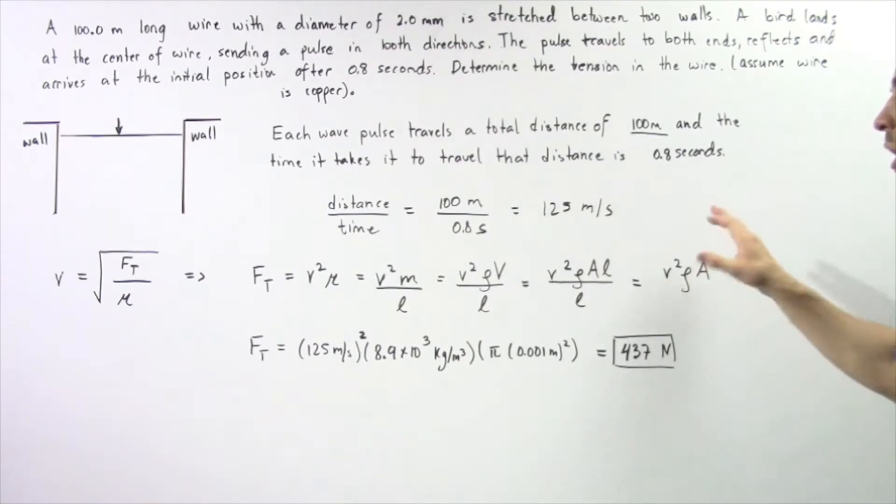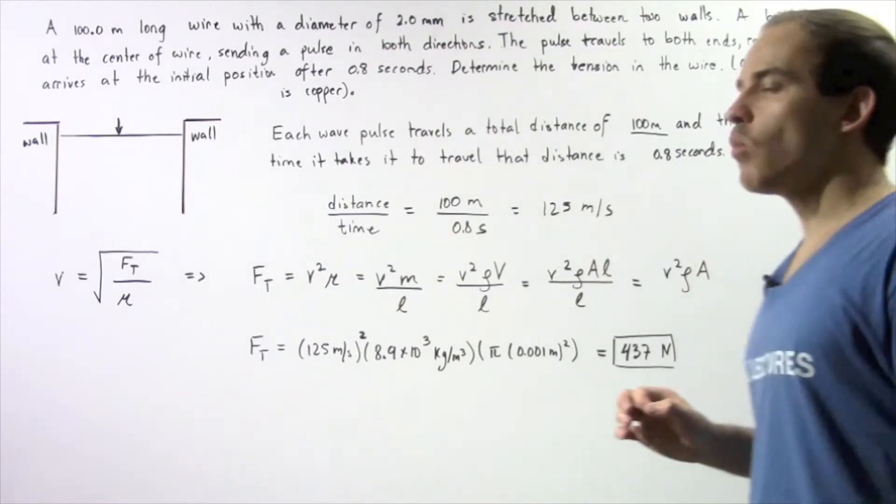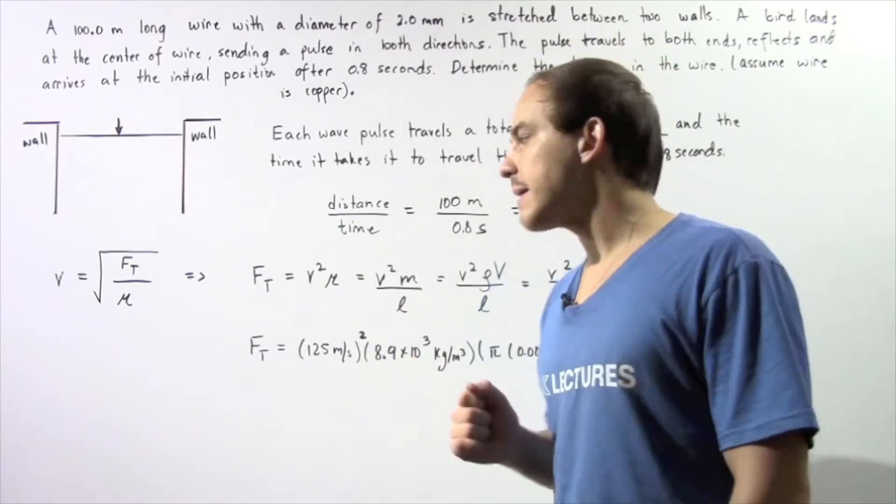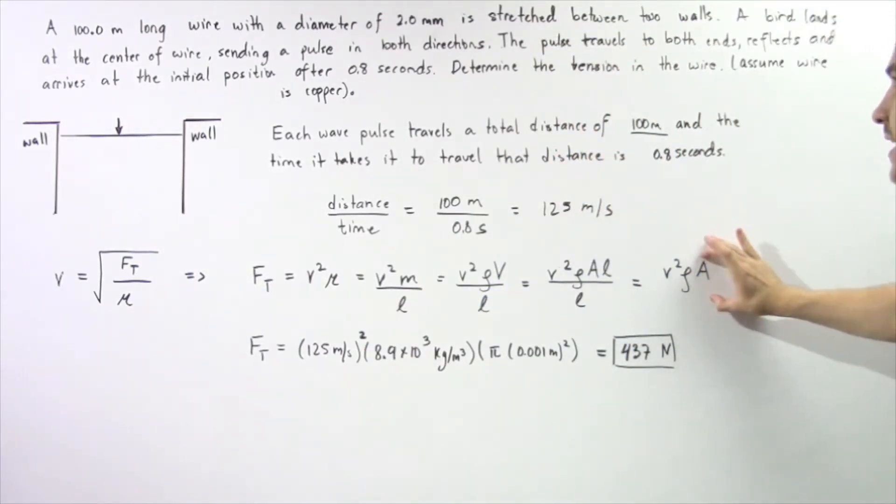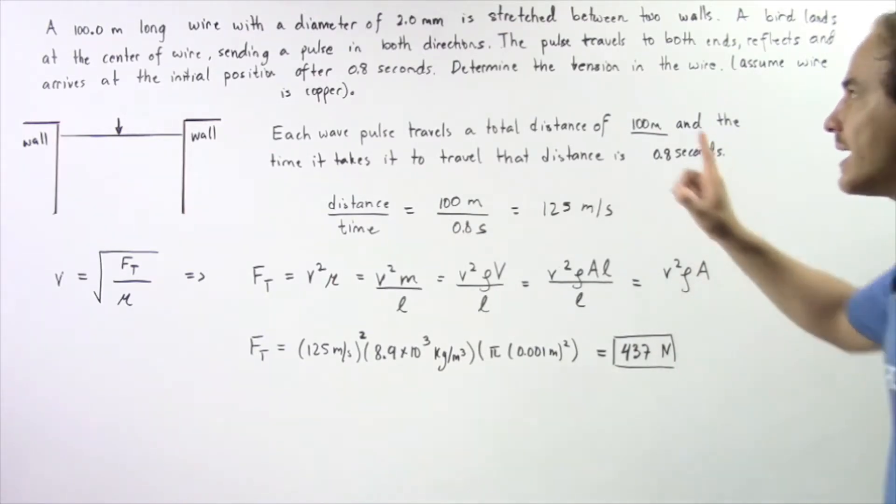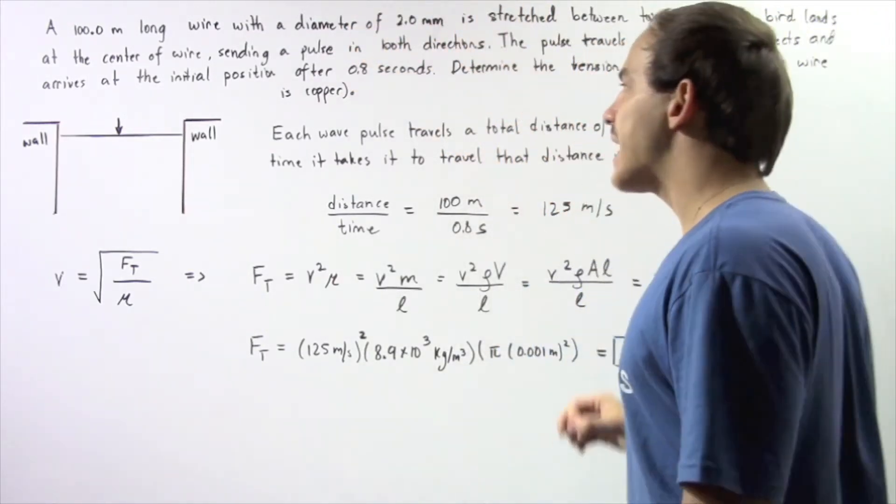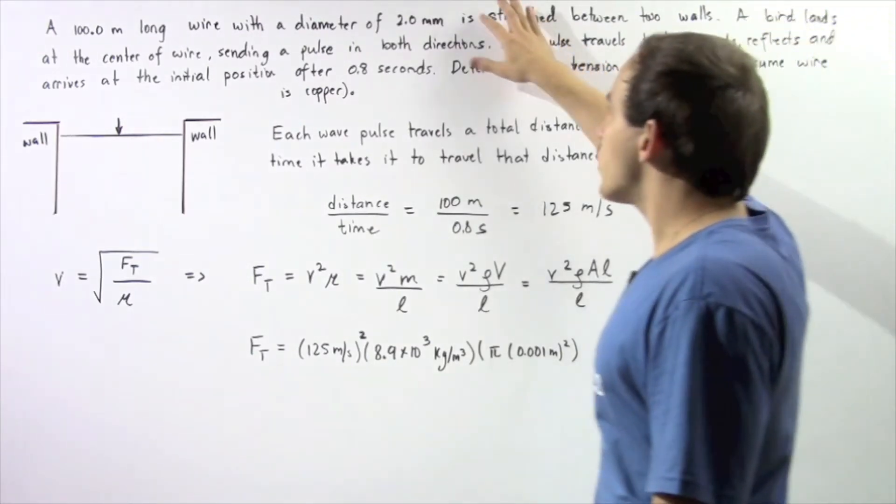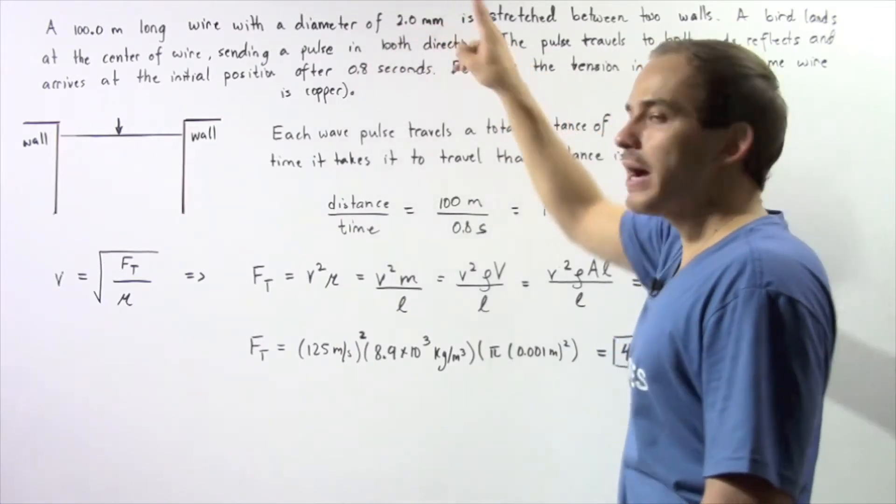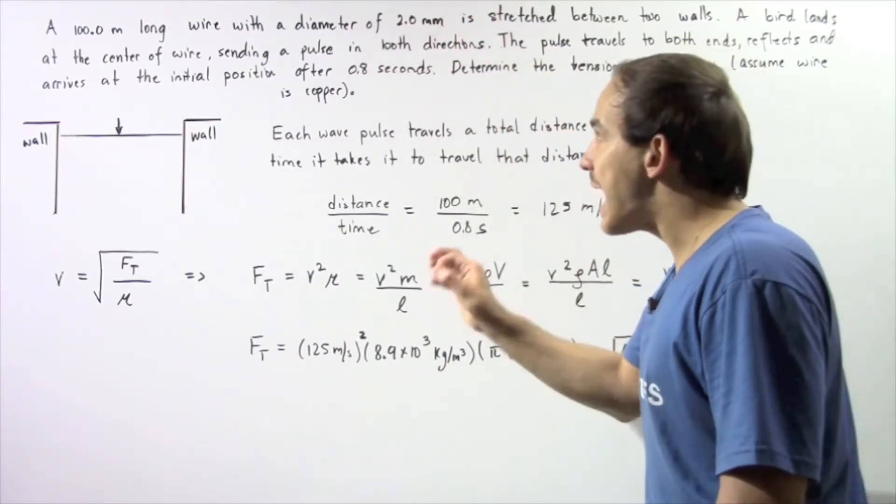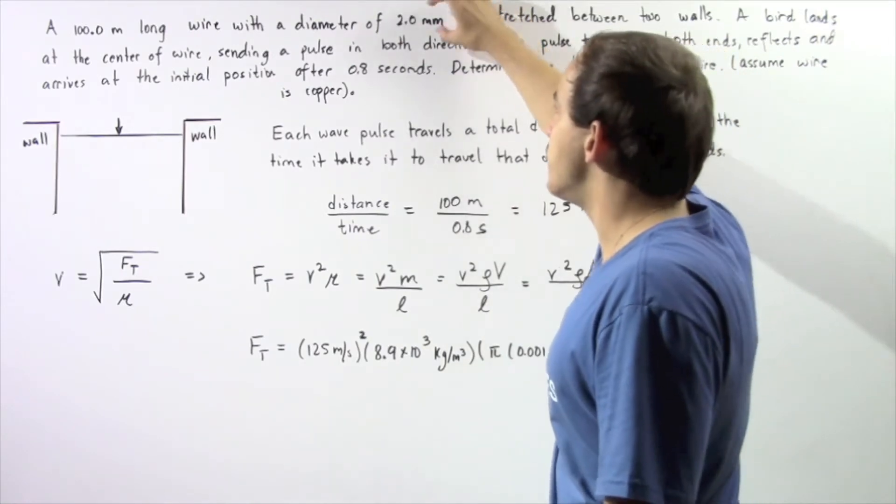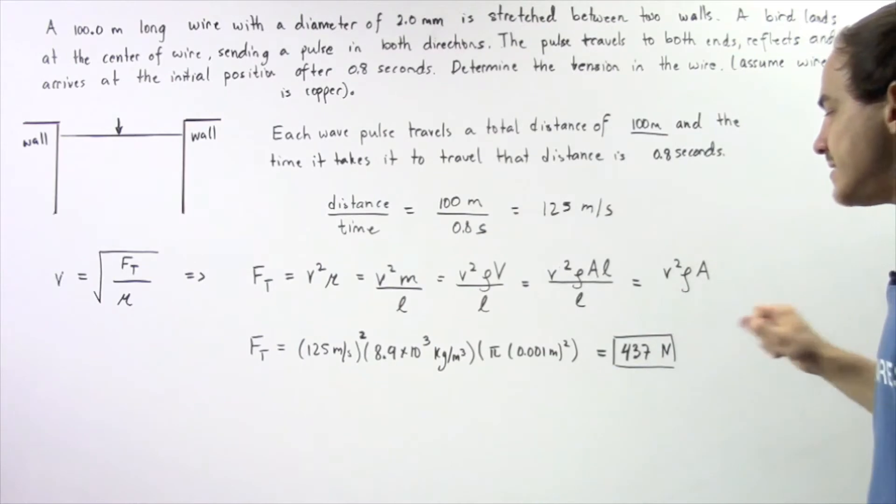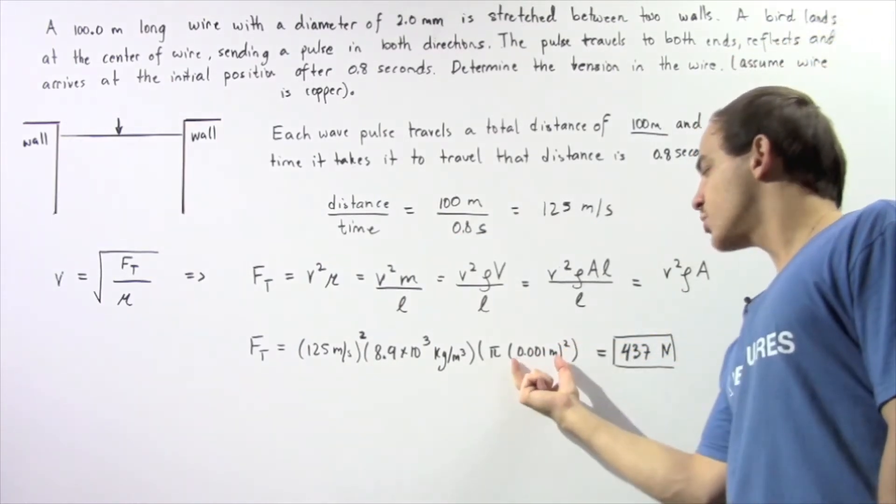So we can look up what the density of our copper wire is. It's simply 8.9 times 10 to the 3 kilograms per meter cubed. And our cross-sectional area is given by taking the radius, squaring that and multiplying by π. So to get the radius, we simply divide this diameter by 2 and divide that by 1000, because we want to convert from millimeters to meters. So the cross-sectional area is simply π times the radius squared.